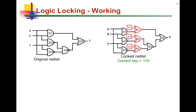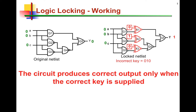Here's a very simple example that illustrates logic locking. On the left, we have the original netlist with three inputs and one output. On the right, we have the same netlist but locked. This netlist is locked using key gates, shown in red, controlled by a secret key that consists of three bits. In this example, the correct key is 110. In the original design, an input vector of 000 is supposed to produce a 0. In the locked netlist, this input vector 000 produces the correct output of 0 only when the correct key is in place. If a wrong key is in place, the output may be wrong — in this example, instead of a 0, we get a 1.